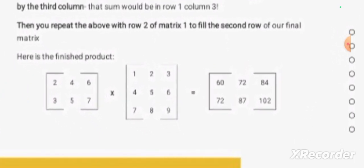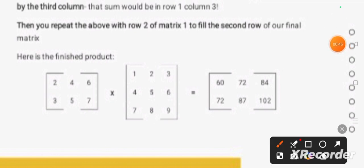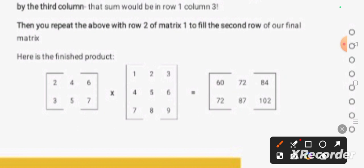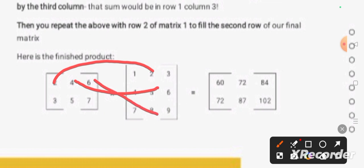Now let us see one by one how to multiply this matrix. Let us take the first row, first column elements: 2x1 = 2, 4x4 = 16, 6x7 = 42. When we add these three values, we get 60 as the answer. Next, first row, second column: 2x2 plus 4x5 plus 6x8. When we add these three values, we get the answer as 72.